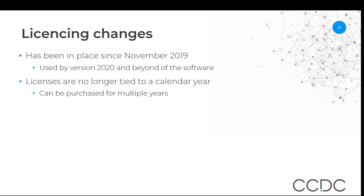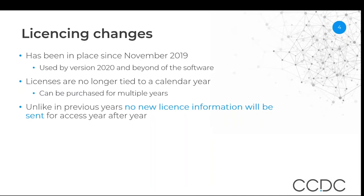Some of the benefits of this change is that your licenses are no longer tied to a calendar year. If it's easier for you to start your licenses in March going on to February of the following year, you do have that flexibility. You can also purchase your license for multiple years — a three-year license or more is an option available when you renew. Unlike in previous years, your license information will no longer be sent to you because it no longer changes every year. Once you obtain your license for the first time, you will get that information, but subsequent renewals will not be sent out. You're always welcome to reach out to us at support or admin if you need that information.